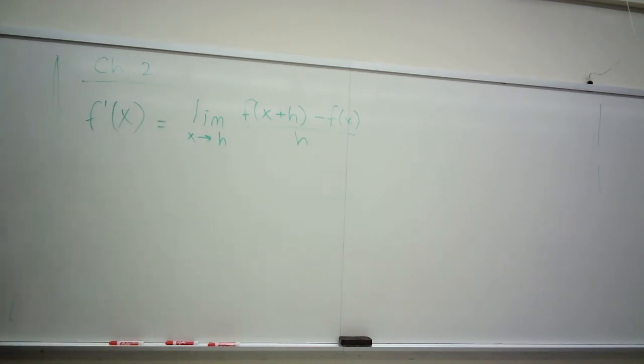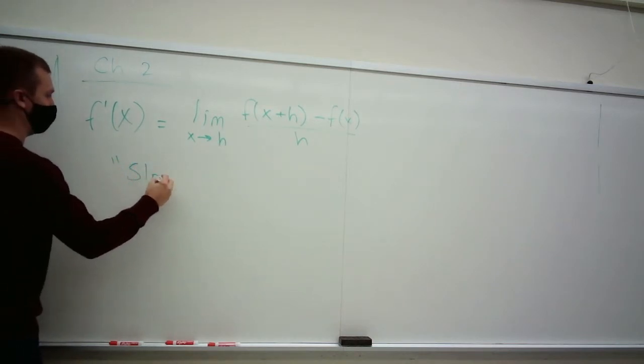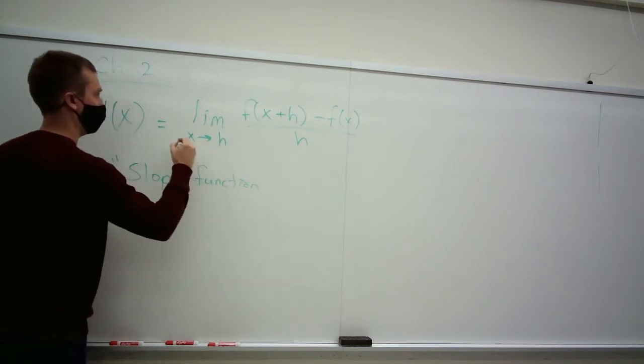Because that secant line, the average is being taken over reduced, even smaller and smaller intervals. So this is a nice slope function if this limit exists.